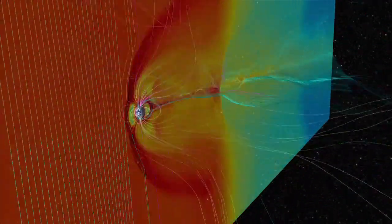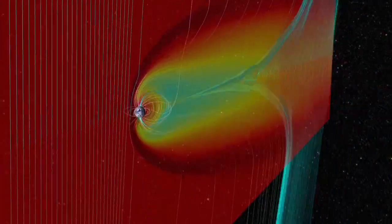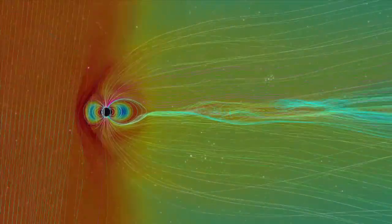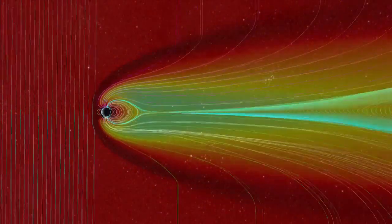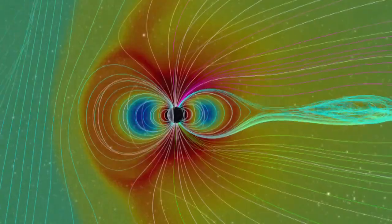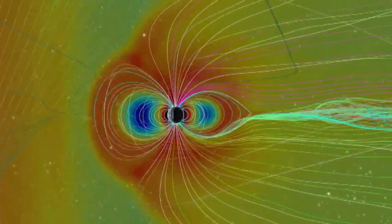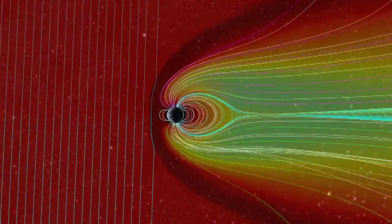With the aid of similar computer models as before, we can explore some of these possibilities. Here, a much stronger CME compresses the magnetic field between the Sun and Earth and generates more density in the bow shock, represented by darker red.